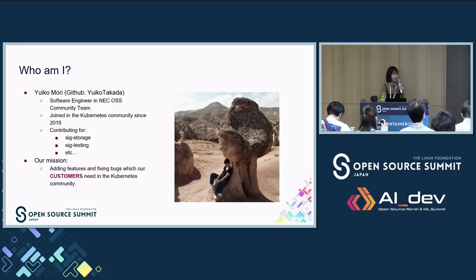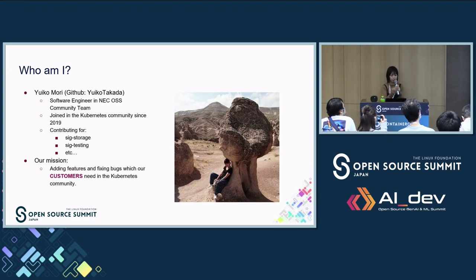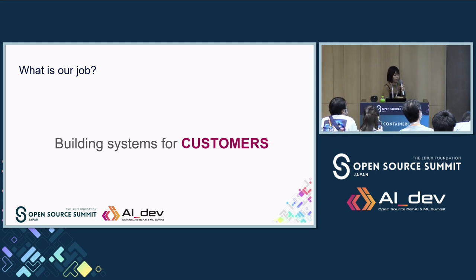My name is Yuiko Mori. I'm a software engineer working for NEC's open source community team. I joined the Kubernetes community in 2019 and am mainly contributing to SIG Release and SIG Testing. Our company is providing Kubernetes to our customers, and my mission is adding features or fixing bugs for them. To be precise, other team members build systems and provide them to our customers — who use Kubernetes — not our company itself.